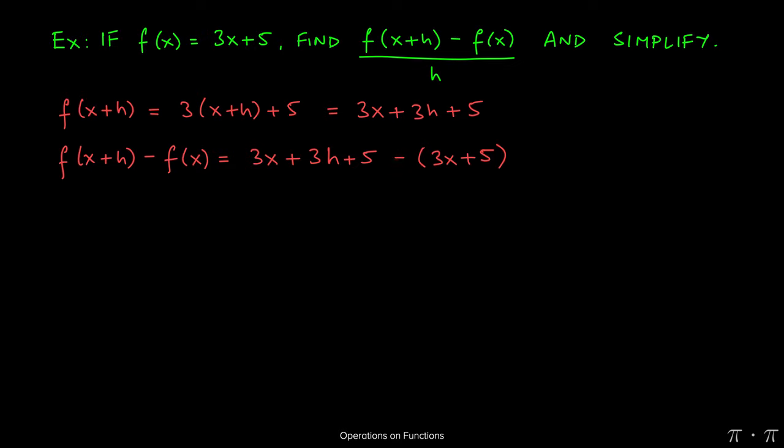When we distribute the negative, negative times 3x gives us negative 3x, negative times the 5 gives us negative 5. Now at this stage, we can combine like terms, but here hopefully you see that 3x and negative 3x will cancel each other out, and so will the 5 and the negative 5. So the only term really left behind is 3h.